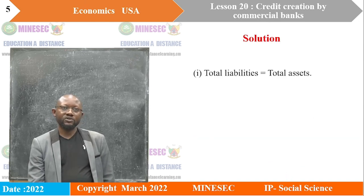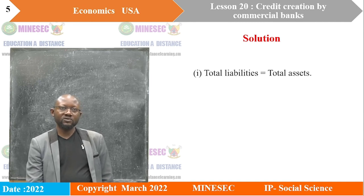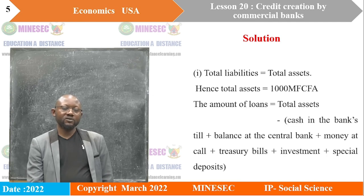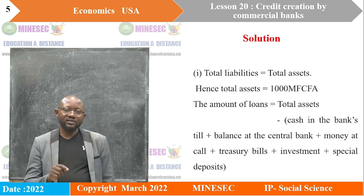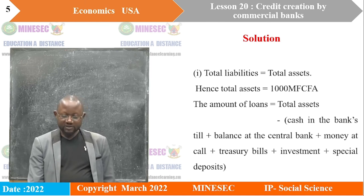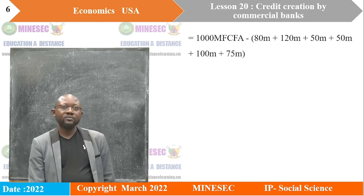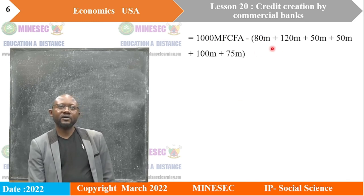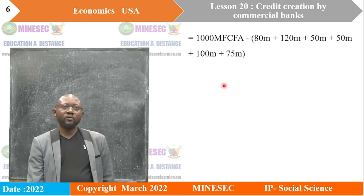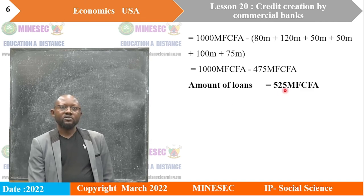The solution: total assets equals total liabilities, which implies total assets is 1,000. So the amount of loans is calculated as total assets minus cash in the bank's coffers, balance at the central bank, money at call, treasury bills, investment, and special deposits. Using the respective values — 1,000 minus 80, 120, and the remaining asset values — the answer gives us 525 million francs CFA. That's the amount of loans.